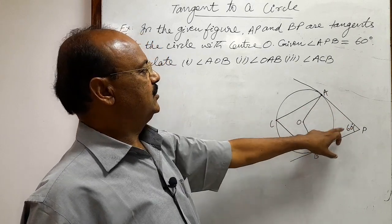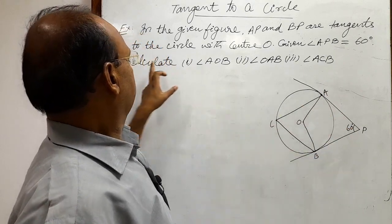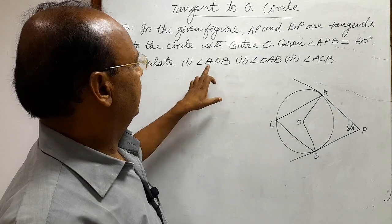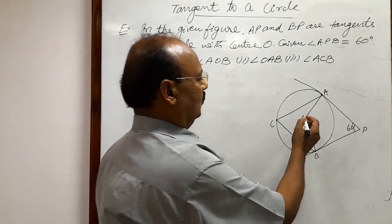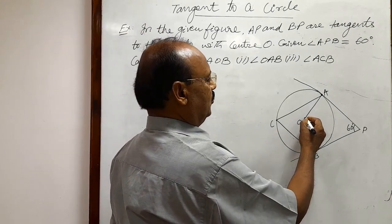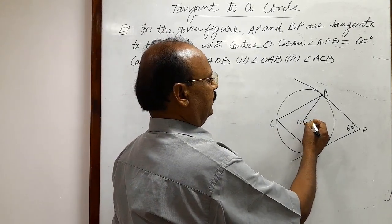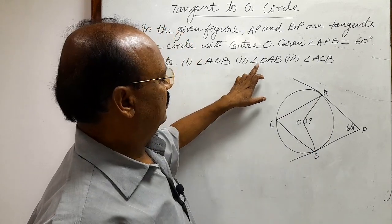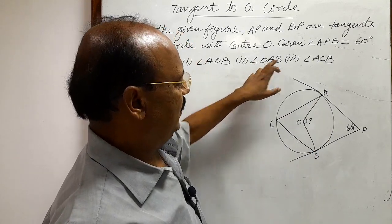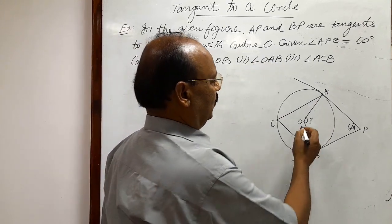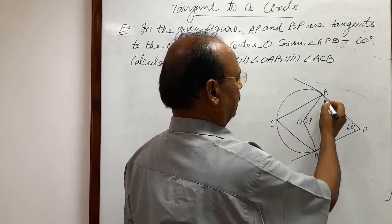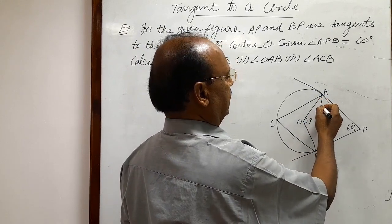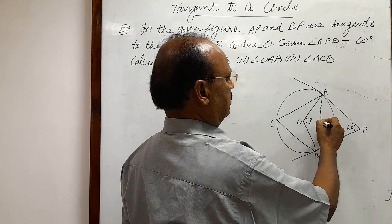Then we have to calculate three angles here. First angle is angle AOB. Second, we have to calculate angle OAB, for which we can join A and B.